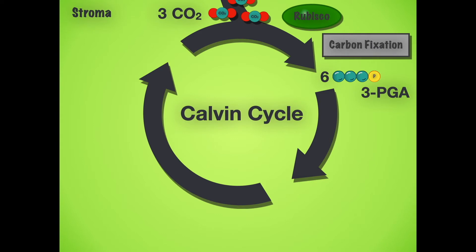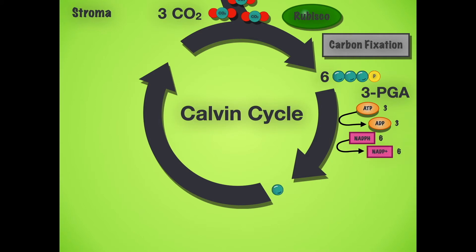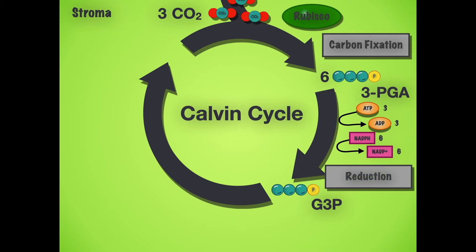This first stage is called carbon fixation. We take carbon dioxide molecules and fix them into 3-PGA. This requires energy — specifically the ATP and NADPH produced by the light-dependent reactions. We use three ATP and six NADPH to allow this chemical reaction to function.